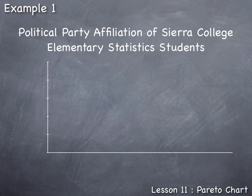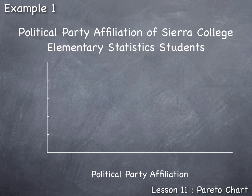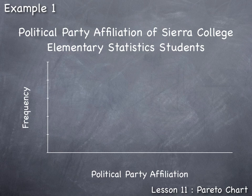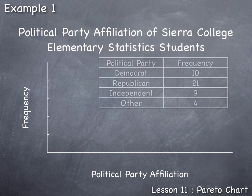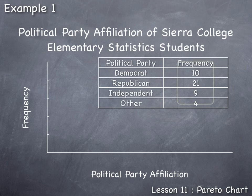To construct the Pareto chart, we draw a vertical and horizontal axis, each clearly labeled. The horizontal axis is the data axis, labeled with political party affiliation. The vertical axis is labeled with the statistic of interest — frequency. To complete the labeling, we need the frequencies of each category. The frequencies range from a low of 4 to a high of 21, so the frequency axis must cover that range.